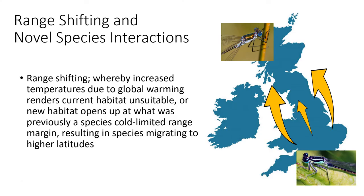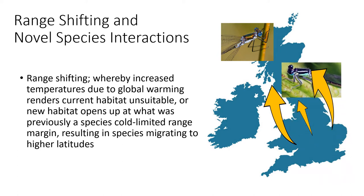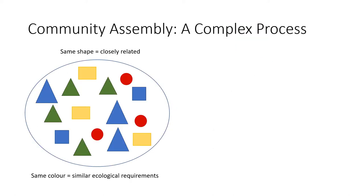We're all aware that climate change has numerous negative impacts on global biodiversity and species population dynamics. One such response to climate change is that of range shifting — essentially global warming-driven species movement, be that because warming has rendered historic habitats unsuitable or has opened up new habitat possibilities beyond what was once a cold-limited range margin, resulting in species distributing to higher latitudes and altitudes. This in turn brings range shifters into contact with local species, creating novel species interactions the outcomes of which could be detrimental for biodiversity.